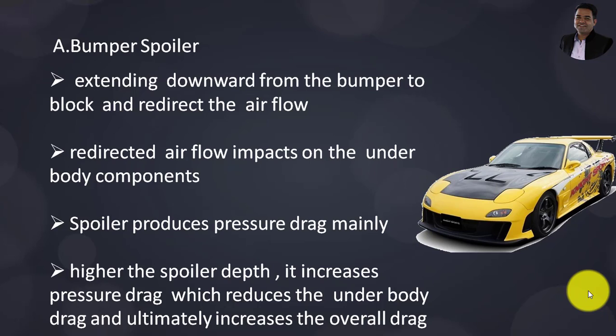First, the bumper spoiler. Bumper spoilers are aerodynamic surfaces extending downward from the bumper to block and redirect airflow. In the picture shown on the right-hand side, you can observe the bumper spoiler. As I said, it extends downward from the bumper to block and redirect airflow.